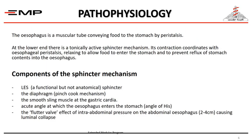The esophagus is a muscular tube that functions to convey food to the stomach by peristalsis. At the lower end there is what is described as a physiologic sphincter — it is not an anatomical sphincter. Its contraction coordinates with esophageal peristalsis; it relaxes to allow food to enter the stomach and to prevent reflux of stomach content into the esophagus.